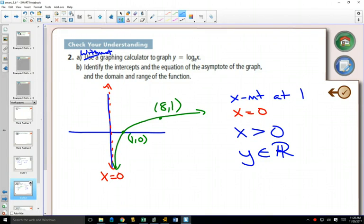So this is your basic log graph. If I changed it to log base 7 of x, then you would have (7,1). If you had log base 20 of x, you'd have (20,1). But every log graph will always have (1,0) in its parent graph and an asymptote at x equals 0.